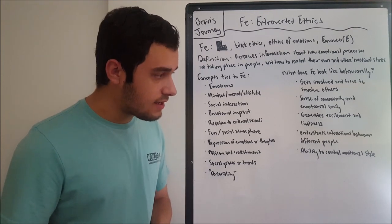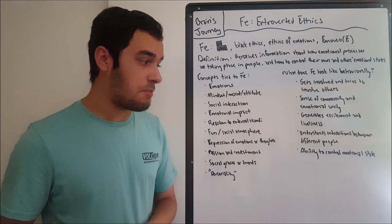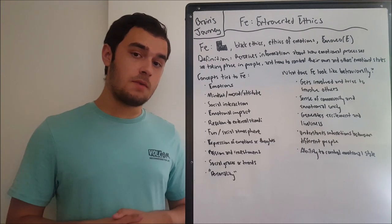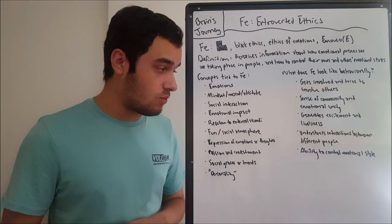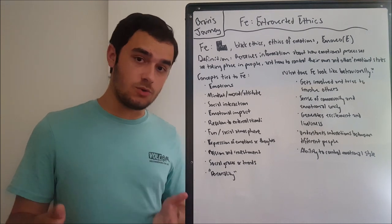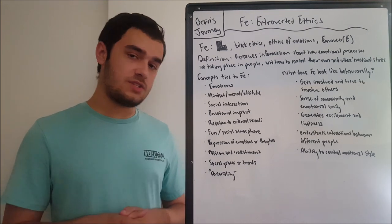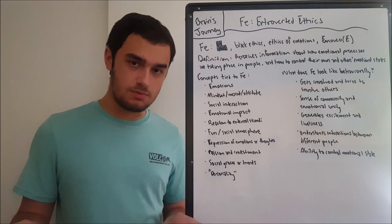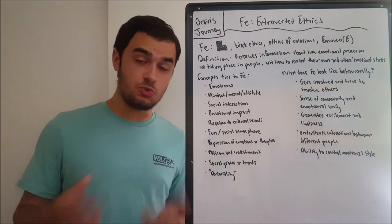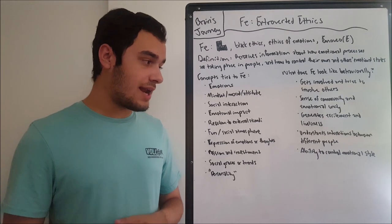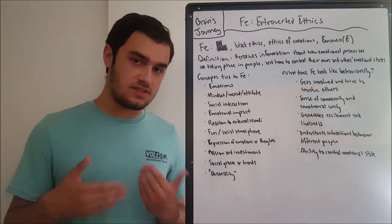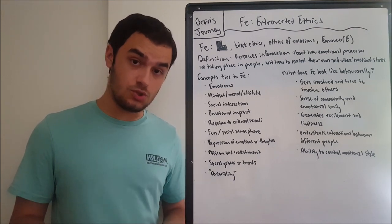A fourth behavioral manifestation is that FE understands interactions between different people. The only way FE can emotionally impact people in the group is if it's intimately aware of the bonds and interactions between the different people. It has to be aware of those things and the social graces before it conducts its activities and does all the things it's attempting to do.